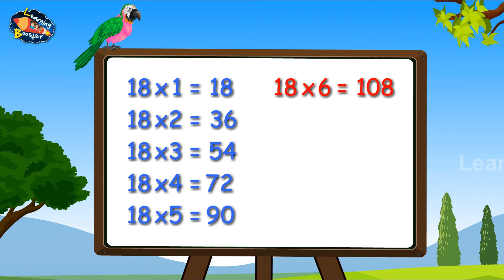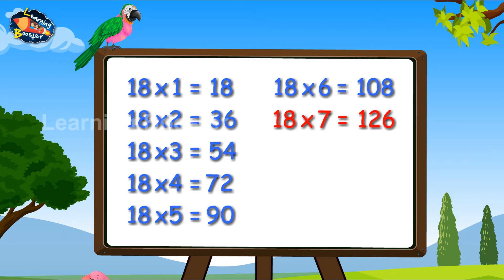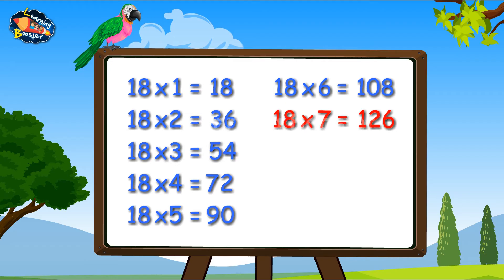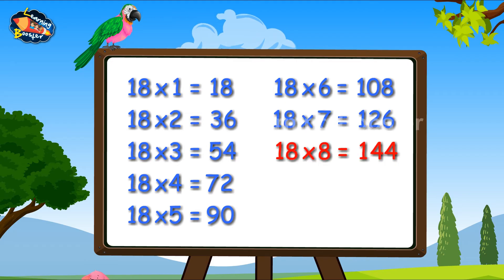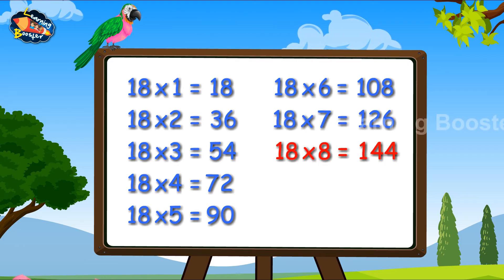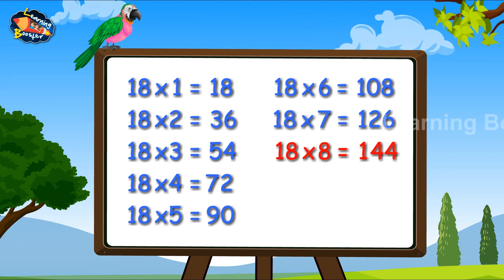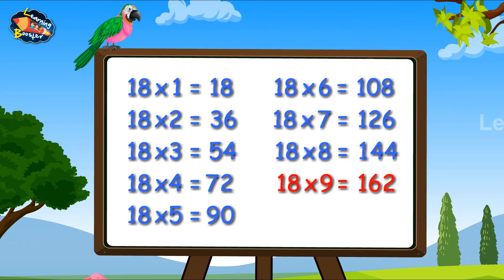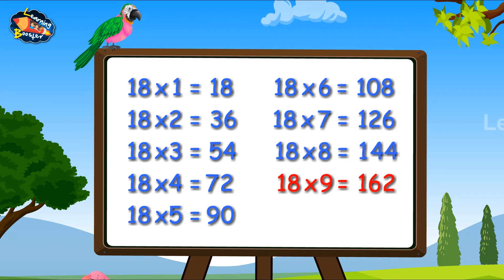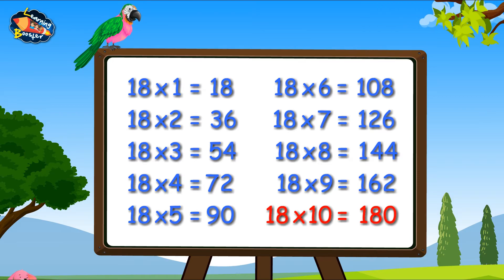18 fours are 72. 18 fives are 90. 18 sixes are 108. 18 sevens are 126. 18 eights are 144. 18 nines are 162. 18 tens are 180.